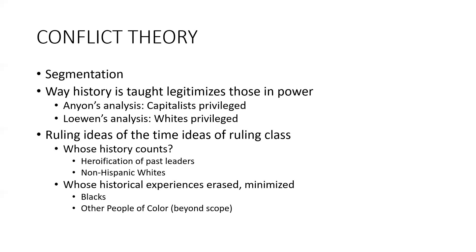We saw that in Anion's work, where capitalism and capitalists were privileged in the recapping of how our economy changed during the period following the Civil War all the way through to World War I. I'm having you read Loewen's work because his work shows us how whiteness is privileged in the telling of historical events in the textbooks. Conflict theorists say this happens because the ruling ideas of the time are the ideas of the ruling class.